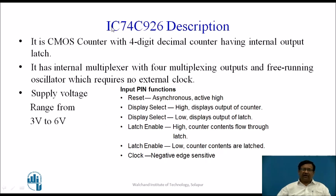The IC74C926 is a CMOS counter with a four-digit decimal counter having internal output latches. Each counter has an internal 4-bit latch. It has an internal multiplexer with four multiplexing outputs and a free-running oscillator requiring no external clock. The supply voltage ranges from 3 volts to 6 volts, supporting a wide range of input supply voltages. The Reset pin is an asynchronous, active high input — when made high, the counters are reset to 0.